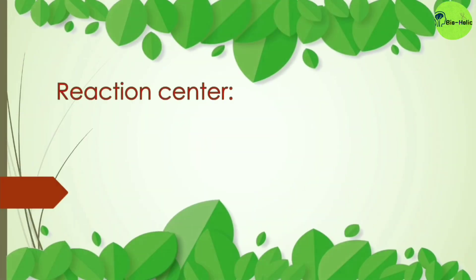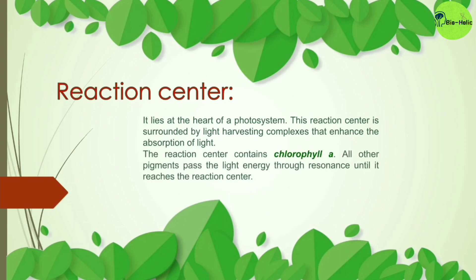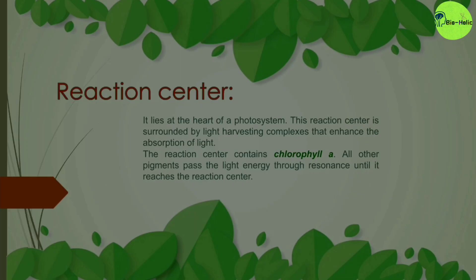The reaction center lies at the heart of the photosystem and is surrounded by light harvesting complexes that enhance the absorption of light. The reaction center contains chlorophyll a, and all other pigments pass the light energy through resonance until it reaches the reaction center.